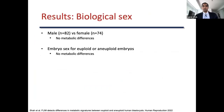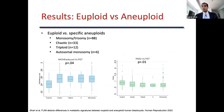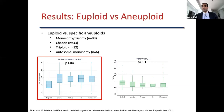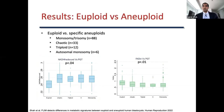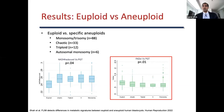A sub-analysis was performed of aneuploid blastocysts by specific chromosomal abnormality, including monosomy trisomy, chaotic, triploidy, and autosomal monosomy. When comparing these aneuploid subtypes to euploid embryos, there were significant metabolic differences for NADH fraction bound and FAD intensity. However, looking further, only euploid versus monosomy trisomy remained significant for NADH fraction bound.